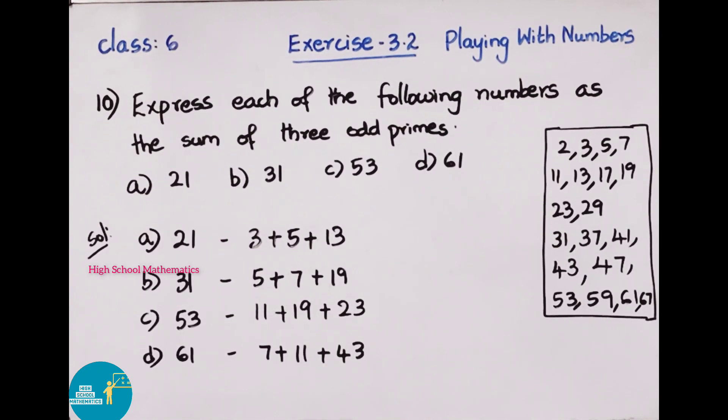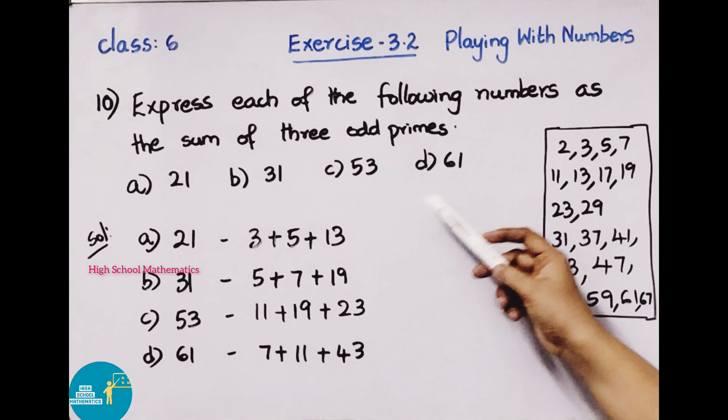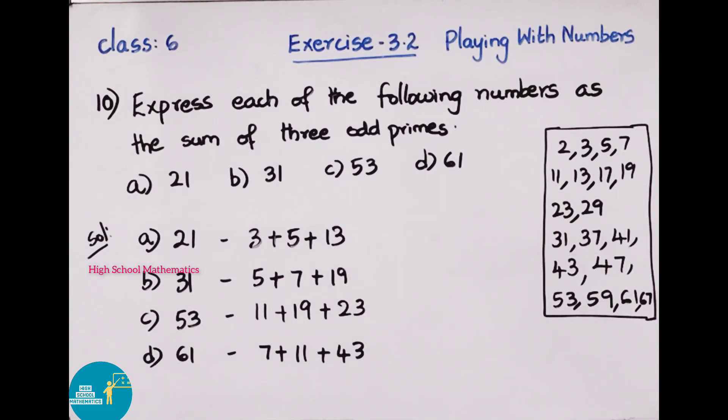Next, 10th question. Express each of the following numbers as the sum of 3 odd primes. a) 21, b) 31, c) 53, d) 61. In this question, we need to write these numbers as sum of 3 odd primes. We have 1 to 70, list of prime numbers. Using these numbers, we need to write each number as sum of 3 odd primes. First question: 21. 21 can be written as 3 plus 5 plus 13. 3 plus 5 is 8. 8 plus 13 is 21. Next, b) 31. 31 can be written as 5 plus 7 plus 19. 5 plus 7 is 12. 12 plus 19 is 31.